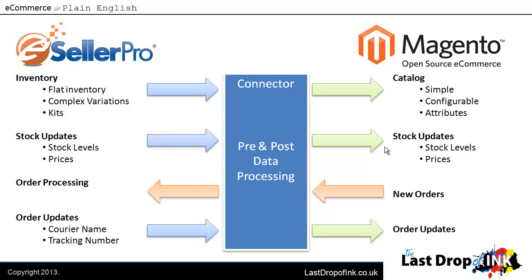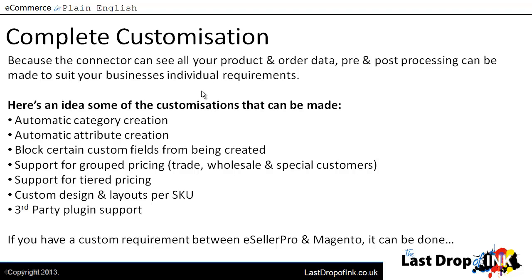If courier tracking information is available it will be added as a shipment to the order and the order will be marked as complete. Because this connector sits between eSeller Pro and Magento, it can see all your product data and all your order data. We can process data pre — before it gets to Magento or before it gets to eSeller Pro — to meet custom business requirements. For example, automatic category creation: you can manage product categories inside eSeller Pro, and when you send products to your Magento store or stores they're automatically created for you.